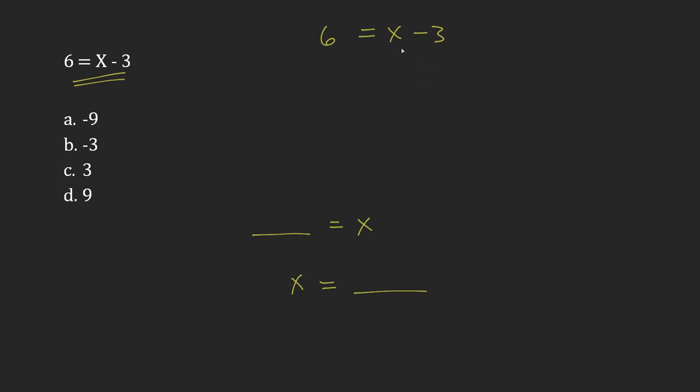To get x by itself on this side, currently I'm minusing 3, so I need to undo that. So I'm going to do x minus 3, but now I'm going to do the exact opposite. I'm going to add 3.